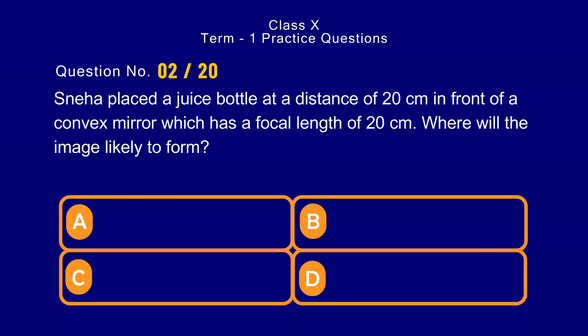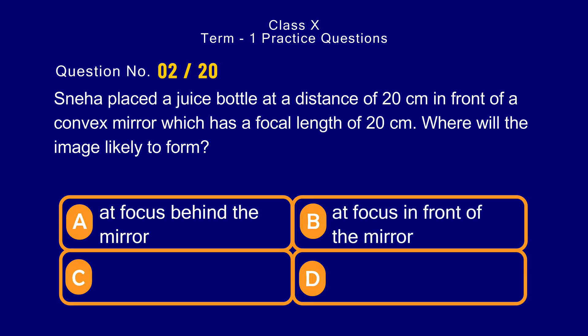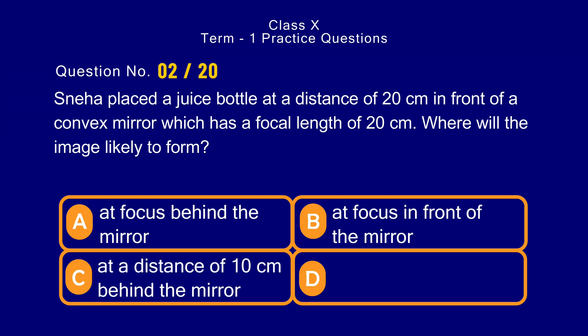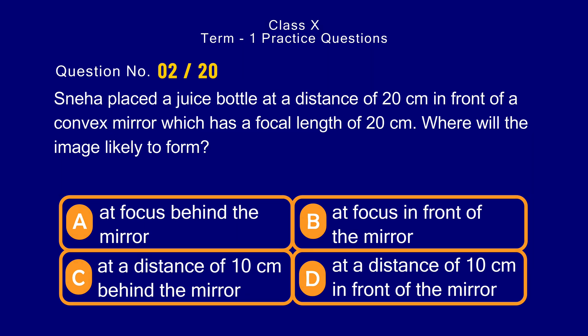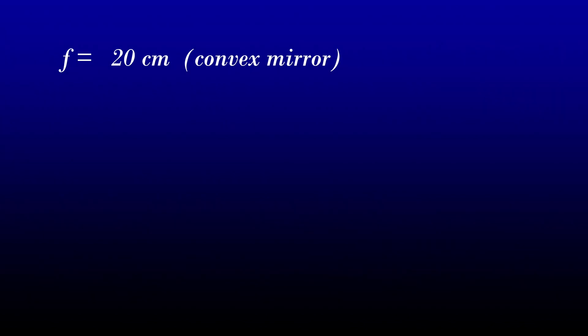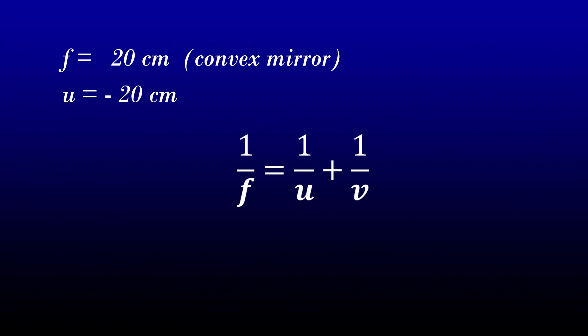Question number 2. Sneha placed a juice bottle at a distance of 20 cm in front of a convex mirror which has a focal length of 20 centimeter. Where will the image likely form? Options: a) at focus behind the mirror, b) at focus in front of the mirror, c) at a distance of 10 centimeter behind the mirror, d) at a distance of 10 centimeter in front of the mirror. The correct answer is option c) at a distance of 10 centimeter behind the mirror. The focal length of the convex mirror is 20 cm and object distance u is minus 20 centimeter. Using the mirror formula, the image distance comes out to be 10 centimeter. The positive value indicates that the image is formed behind the mirror.